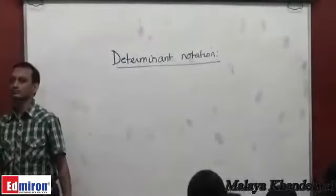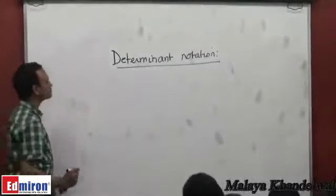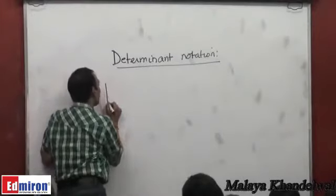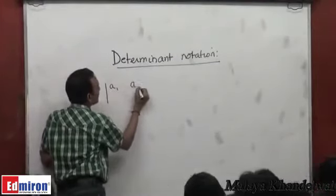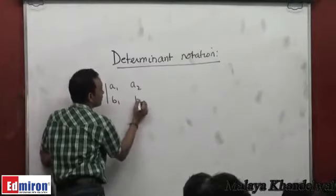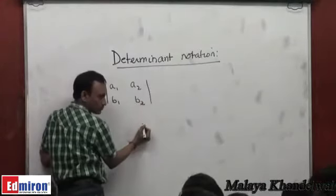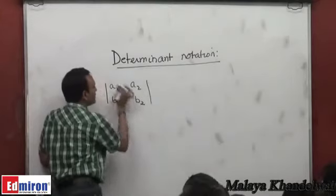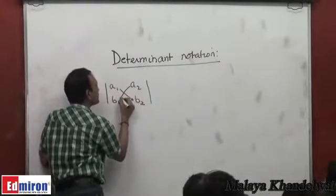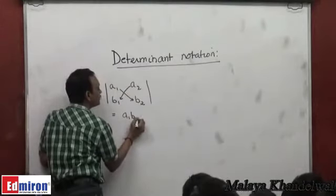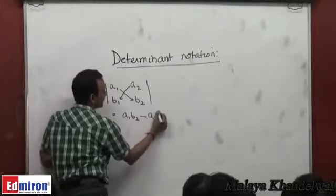Determinant notation: You know when you have four numbers written as a1, a2, b1, b2, then the determinant written like this is actually a1 into b2 minus a2 into b1. This is actually a1 b2 minus a2 b1.